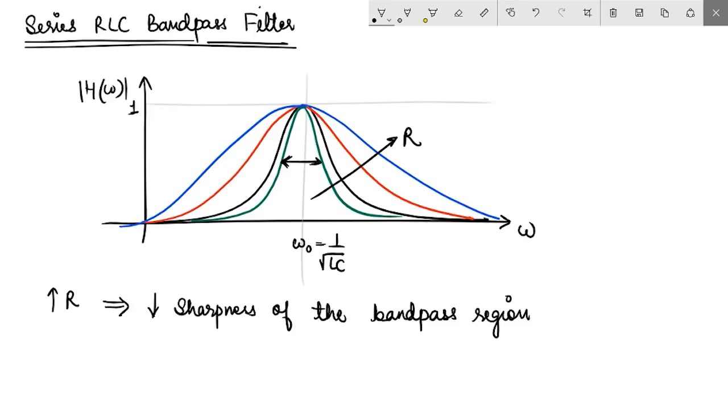If you do the same analysis for a parallel RLC circuit, you would find that you could actually increase the sharpness by increasing R. But for a series RLC bandpass circuit, as R is increased, the sharpness of this bandpass region decreases.